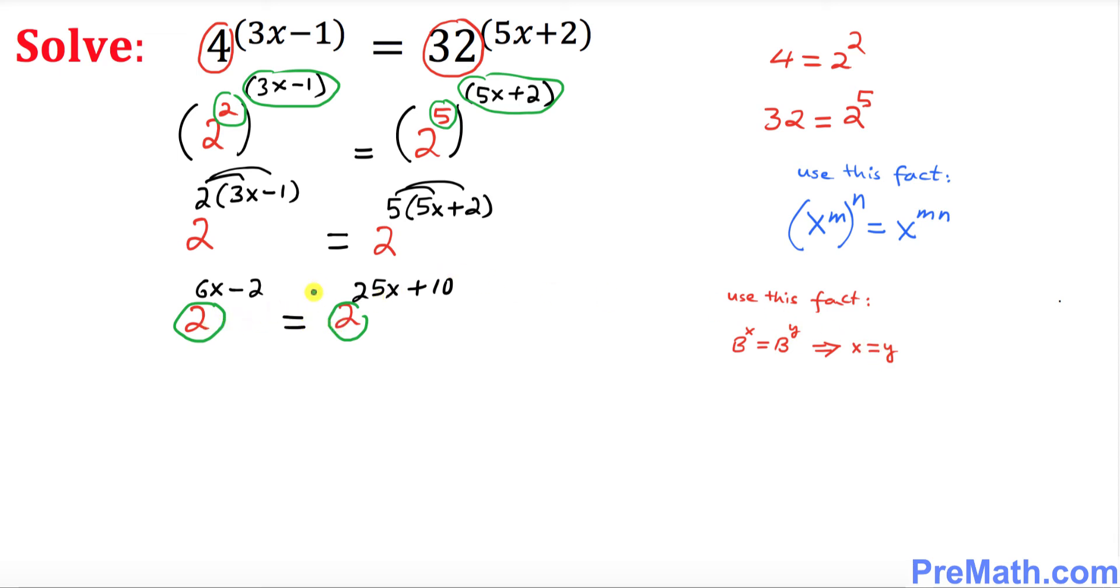Since our bases are the same, we can equate the exponents. So I can write 6x minus 2 equals 25x plus 10.